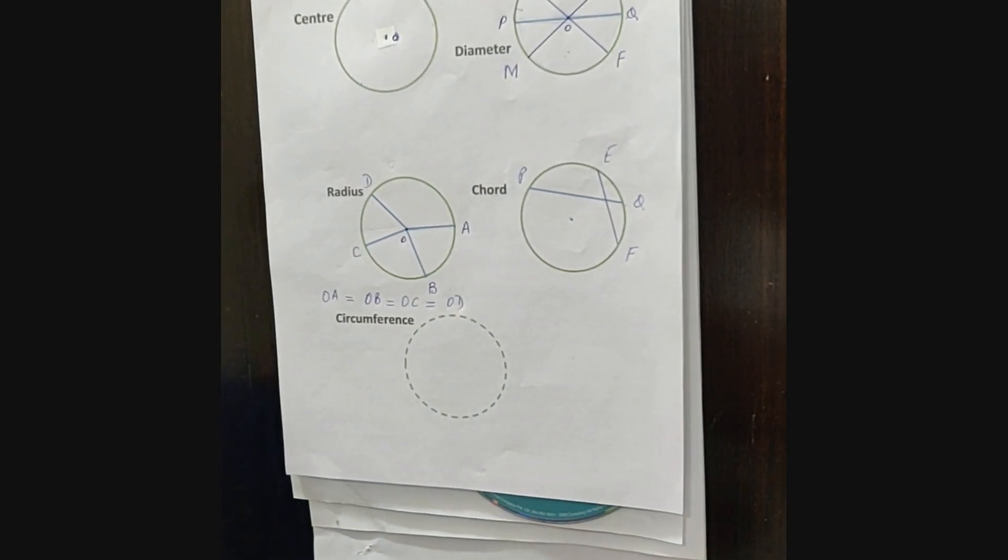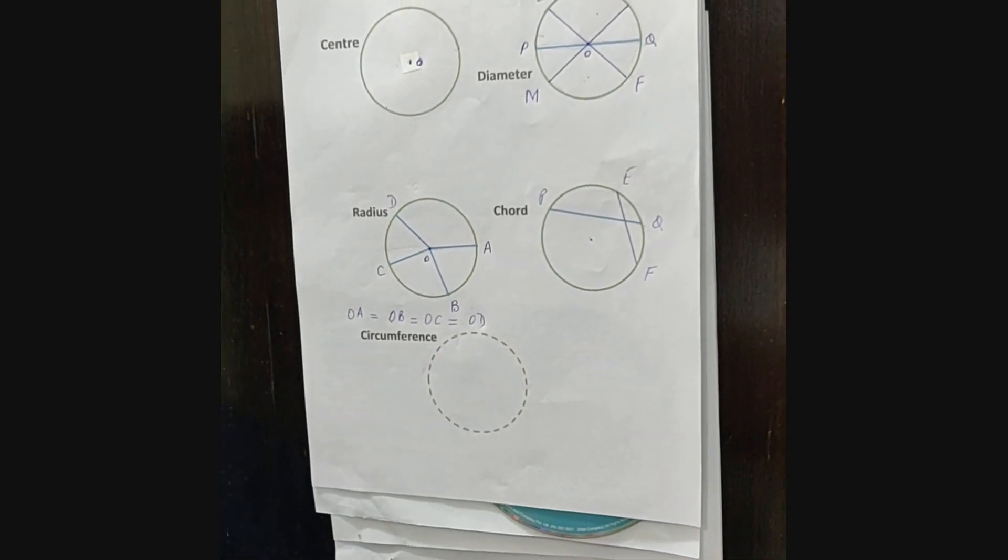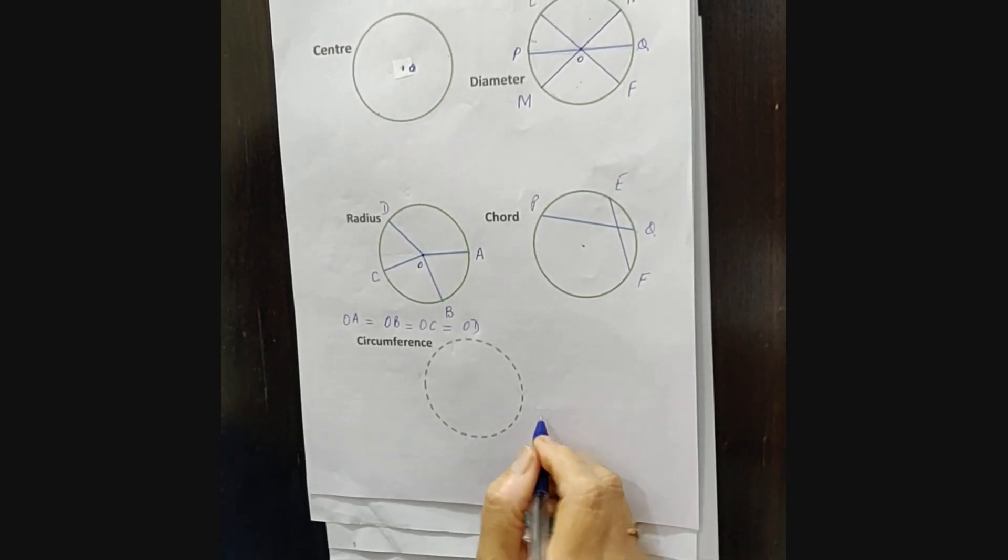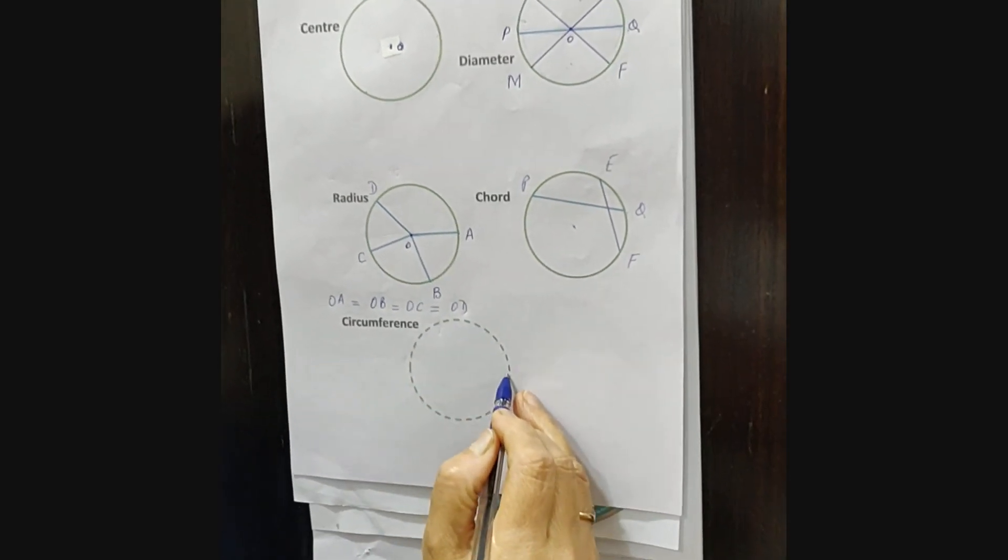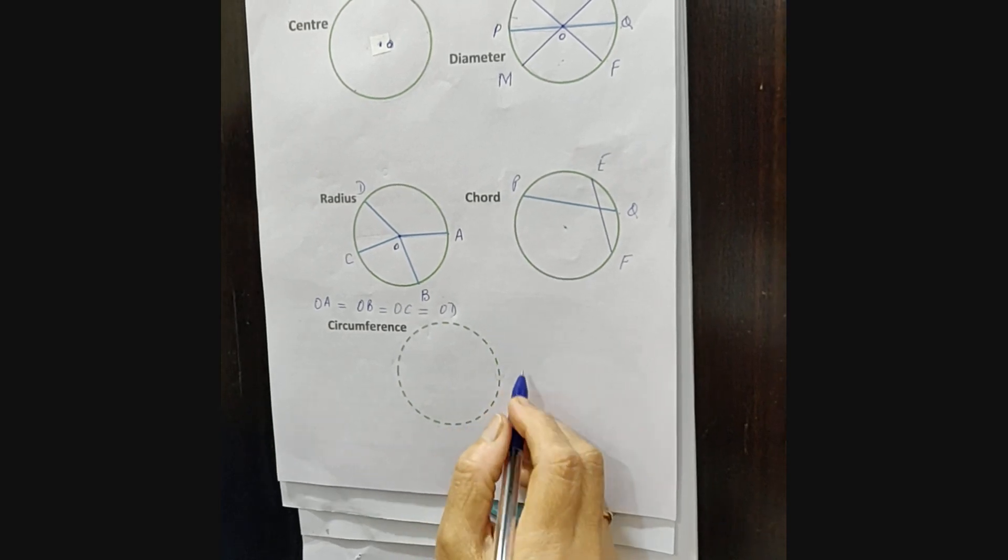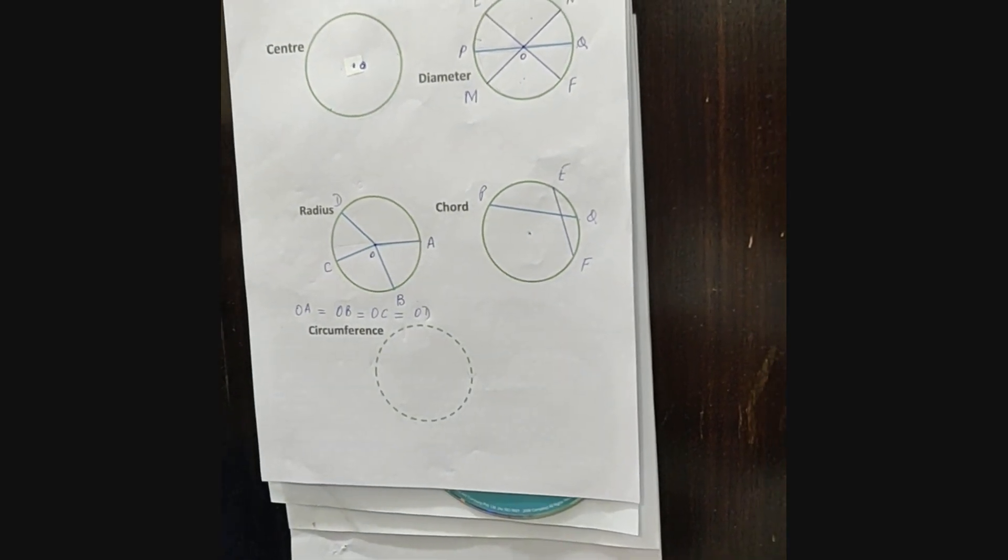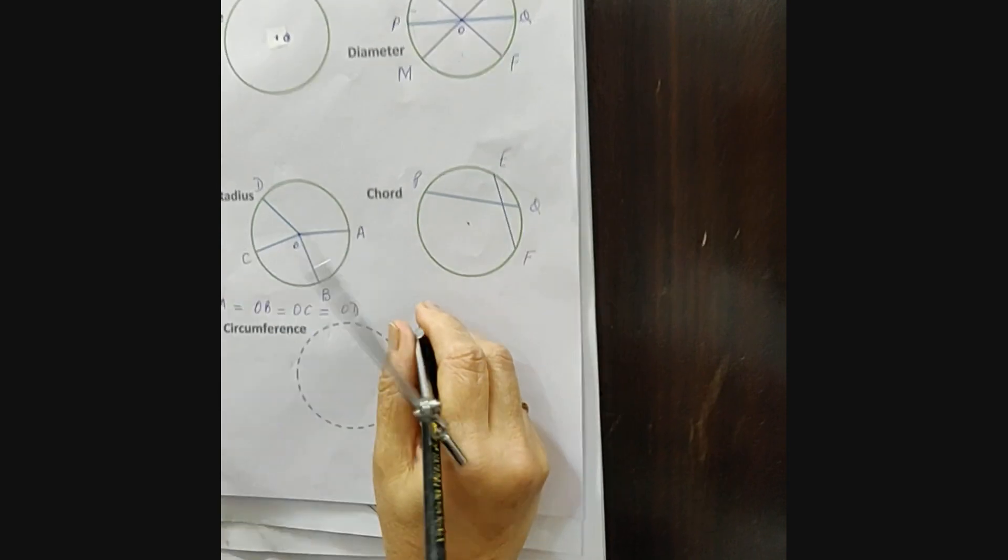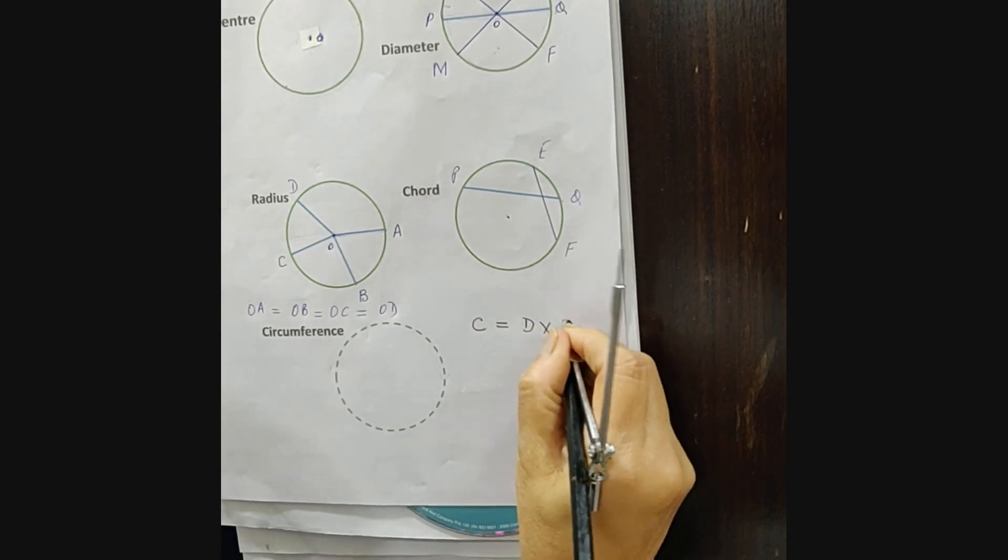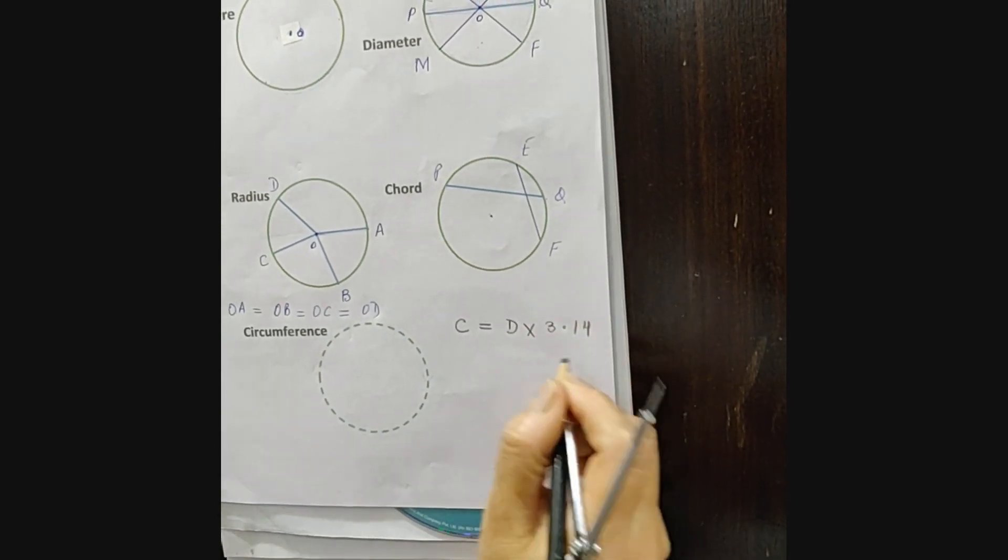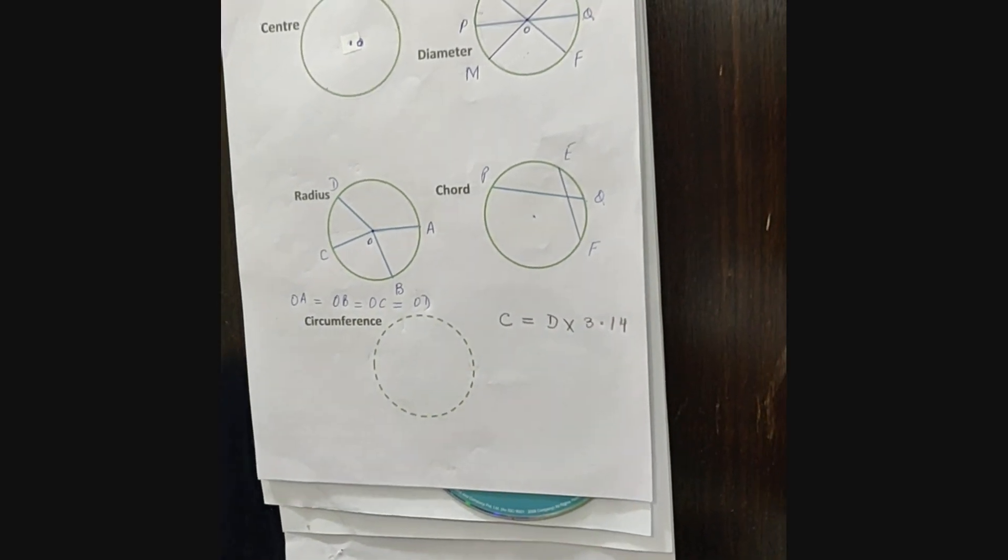Now next comes circumference. The length of the boundary of the circle is called circumference. We can measure by simple activity by taking wool or thread, pasting it around, and then measuring it. There is one more formula: C equals D times 3.14. When we multiply diameter by 3.14, we get the circumference of the circle.